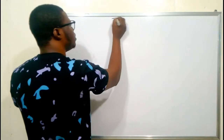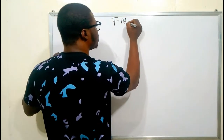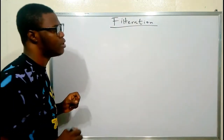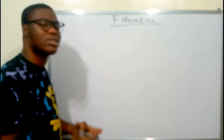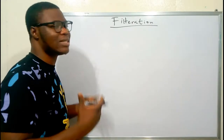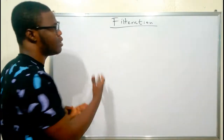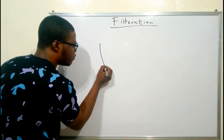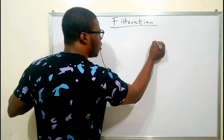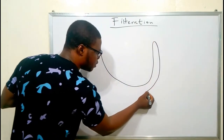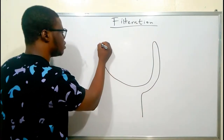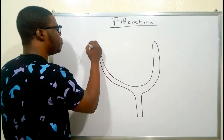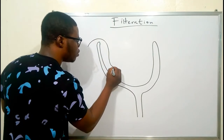Let's start with filtration. Filtration occurs in the renal corpuscle. The renal corpuscle is the combination of the cup-shaped glomerular capsule and the glomerulus itself. I'm going to bring in a diagram of the renal corpuscle so you can see these two structures.